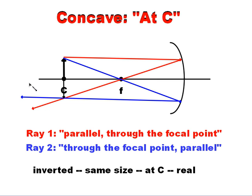What we get here is an image which is inverted, but it is exactly the same size as the object, and it is at the same position as the object at the center of curvature. It's also a real image. That's basically the same as the last one we did. It just happened to be at C.